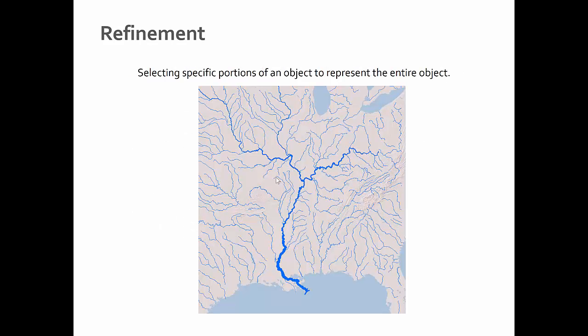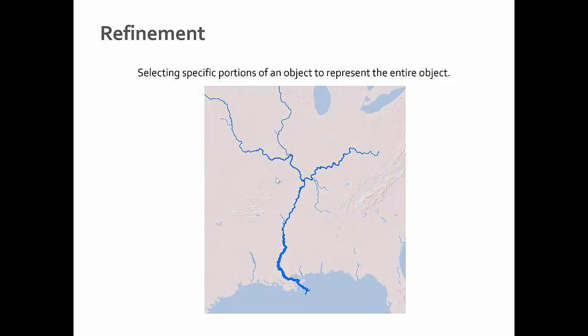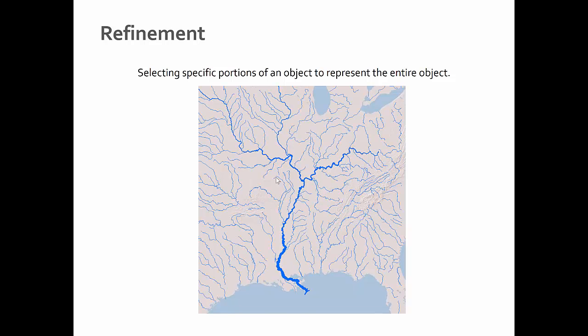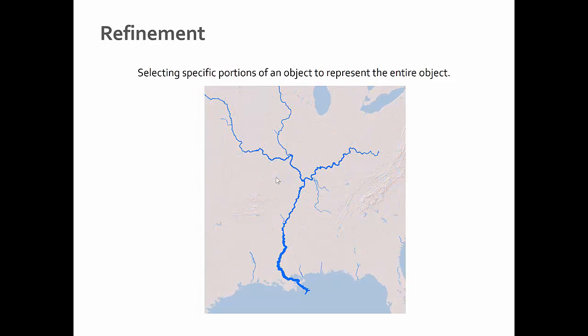Refinement is simply selecting specific portions of an object to represent the entire object. Here we have rivers — lots of rivers, too many rivers. Now we have fewer rivers; we're refining what we want people to look at. This is probably every river in the watershed, and the Mississippi and Missouri are made thicker to pop out. But if that's not the point, we can refine by selecting specific portions to keep and getting rid of everything else. Another example: a lot of rivers and roads are left off a map, and just the important ones are kept.